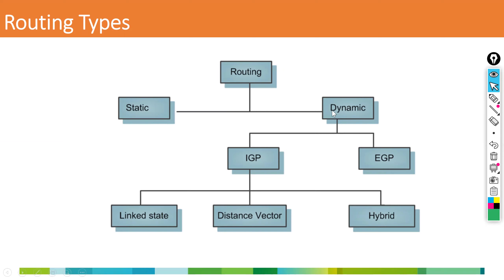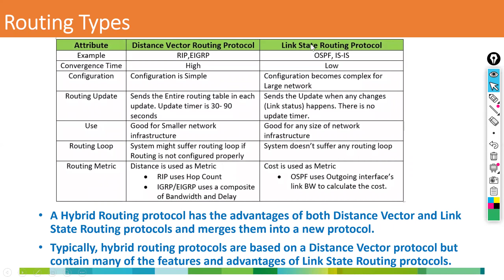There are two types under IGP: distance vector and link state. Examples of distance vector: RIP and EIGRP. Examples of link state: OSPF and ISIS. Comparing them — convergence time is high for distance vector, low for link state. Configuration is simple for distance vector, complex for link state. Routing update: distance vector sends the entire routing table every 30 to 90 seconds, while link state sends only partial updates. Distance vector is used for small networks; link state is used for big networks. Each protocol uses its own metric to select the best path.